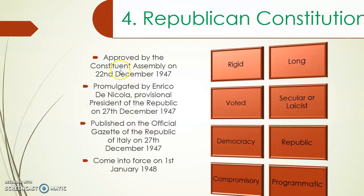Our constitution was approved on the 22nd to the 27th of December 1947. It was promulgated by Enrico De Nicola, provisional president and first president of the Republic of Italy, on the 27th of December. It was published in the official Gazette of the Republic of Italy on that same day, and came into force on the 1st of January. It was also published in all municipalities, and throughout all of 1948 there was a room where people could go and physically read the constitution to learn what it meant and contained.